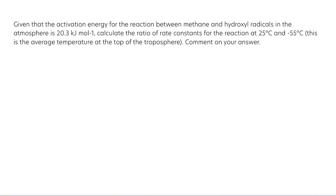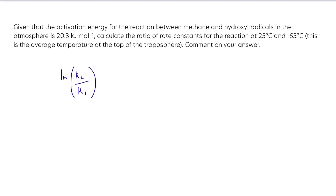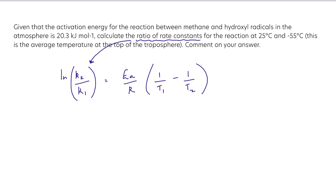Given that the activation energy for the reaction between methane and hydroxyl radicals in the atmosphere is 20.3 kilojoules per mole, calculate the ratio of rate constants for the reaction at 25 degrees C and minus 55 degrees C, and comment on your answer. Going back to our equation, ln(K2/K1) equals Ea over R times (1 over T1 minus 1 over T2) — this is the ratio of rate constants we're looking for.